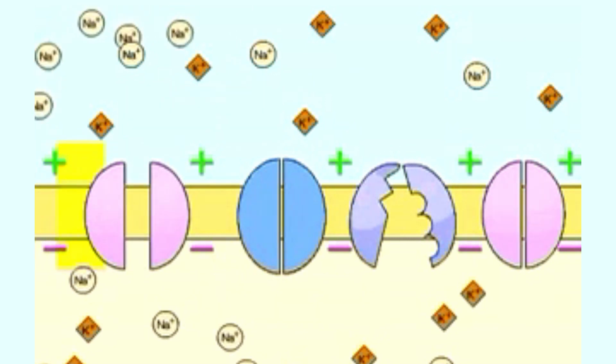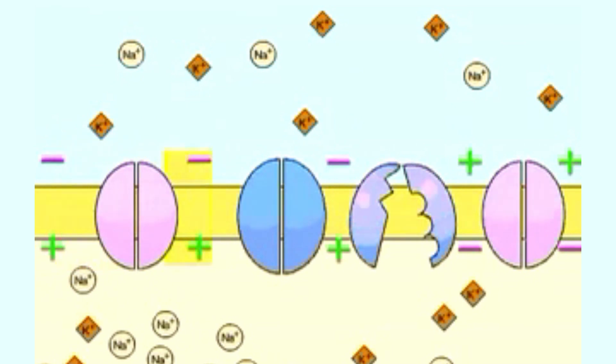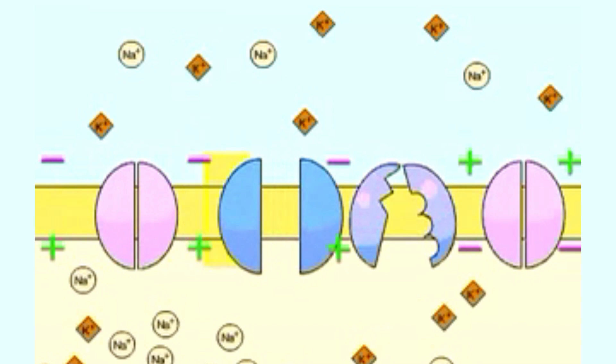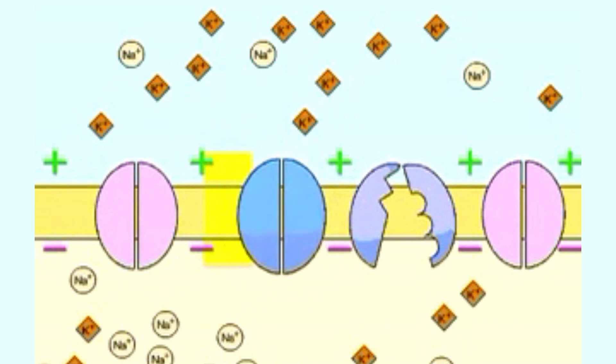A stimulus causes voltage gated sodium channels to open and sodium ions rush into the cell. The cell becomes positive on the inside and negative on the outside. Very quickly, the sodium channels close while voltage gated potassium channels open, allowing potassium ions to rapidly diffuse out. The cell returns to being positive on the outside and negative on the inside, and the potassium channels close.